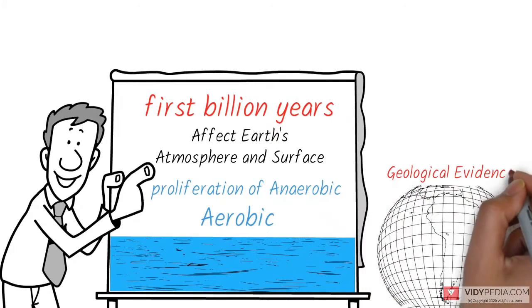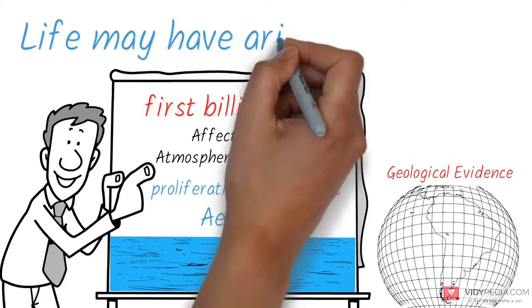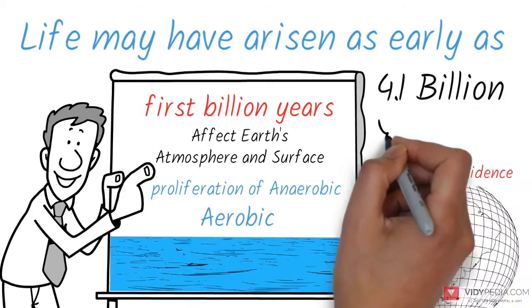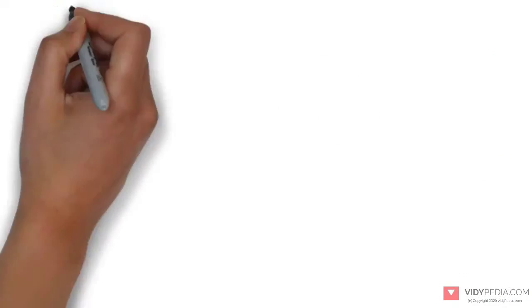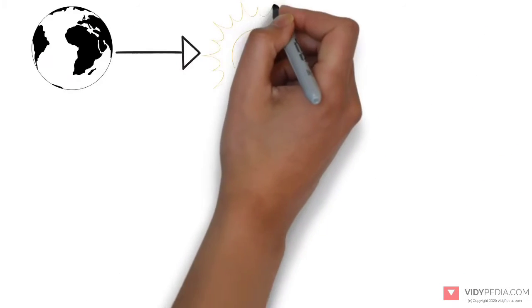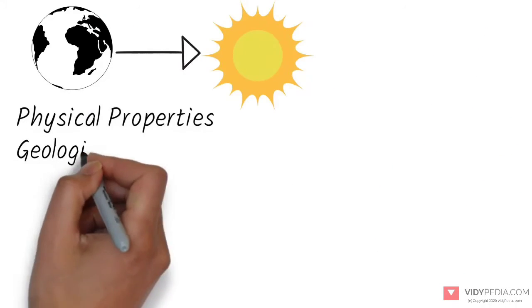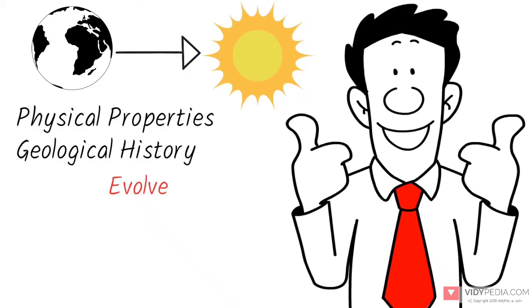Some geological evidence indicates that life may have arisen as early as 4.1 billion years ago. Since then, the combination of Earth's distance from the sun, physical properties, and geological history have allowed life to evolve and thrive.